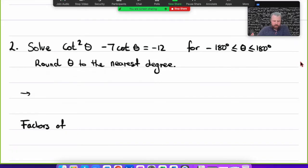Question 2 says solve cot²θ - 7cot θ = -12 for the domain -180° to 180°. It's telling me to round θ to the nearest degree. That's interesting because it says round it to the nearest degree, so straight away I'm probably not dealing with exact ratios. I'm probably going to have to use my calculator. Be careful because it's in degrees, so I need to make sure my calculator is in degrees.